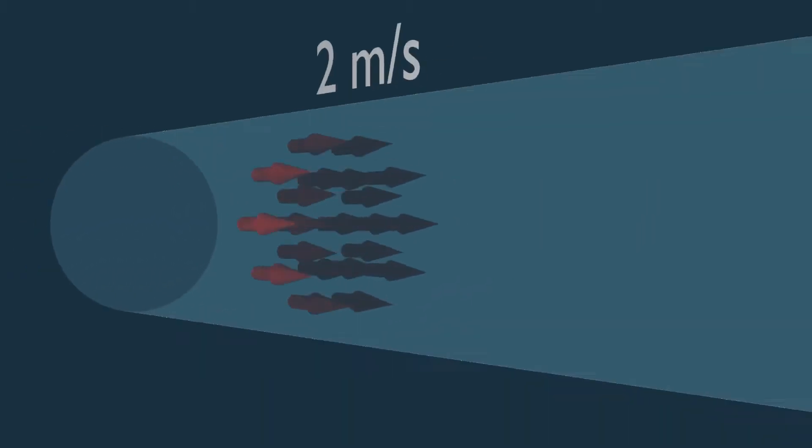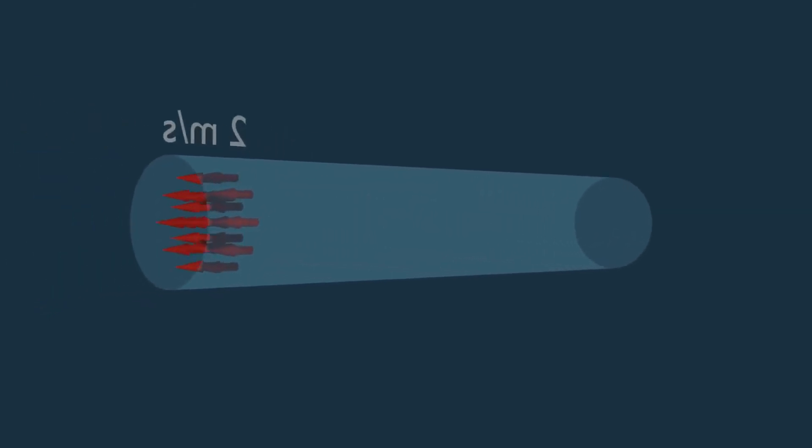Steady Uniform Flow. An ideal fluid maintains the same velocity at all times and at each point. This is called steady uniform flow.